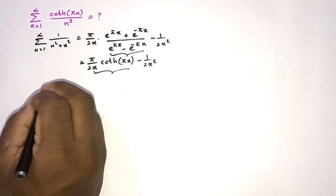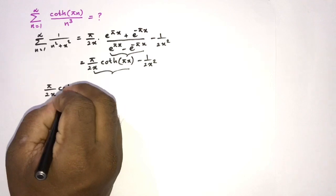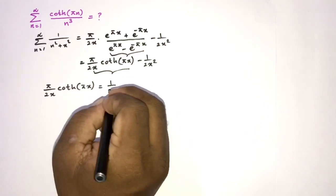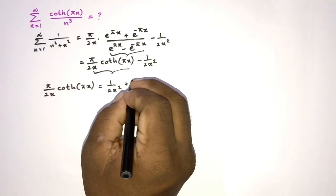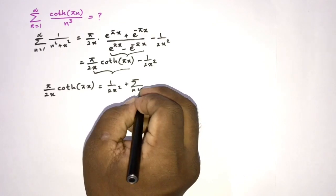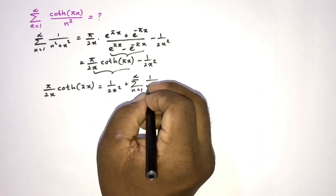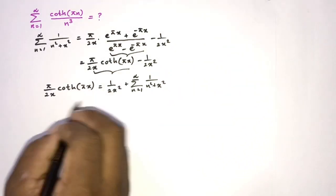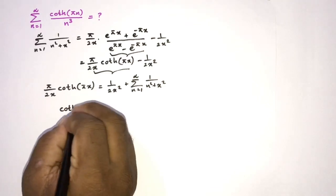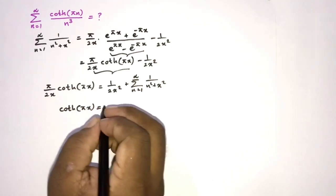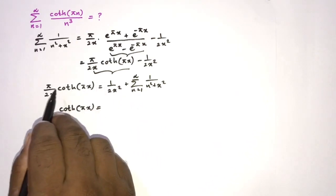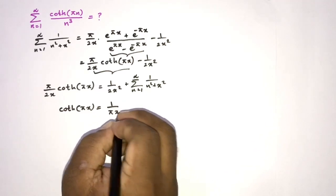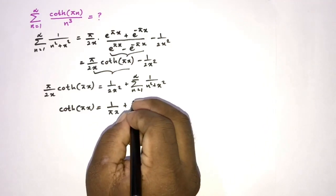I'm going to isolate this part. We can write pi over 2x times hyperbolic cotangent of pi x equals 1 over 2x squared plus the sum from 1 to infinity of 1 over n squared plus x squared. Then let us isolate hyperbolic cotangent of pi x.